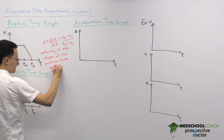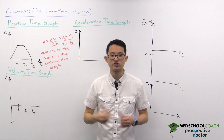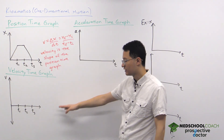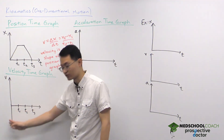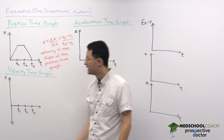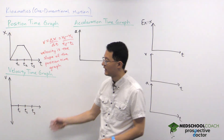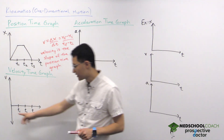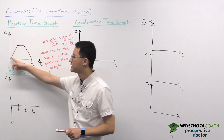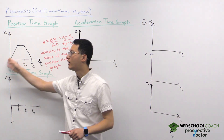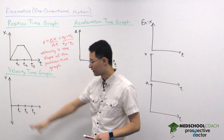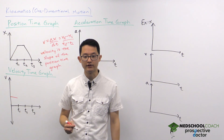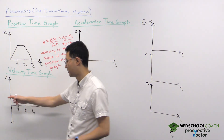Knowing this, you should be able to look at a position-time graph and extract the velocity at any point during the motion. We can draw the velocity-time graph from the position-time graph. From time 0 to T1, the position-time graph had a constant positive slope, so the velocity from 0 to T1 should be a constant positive value — and indeed it is.